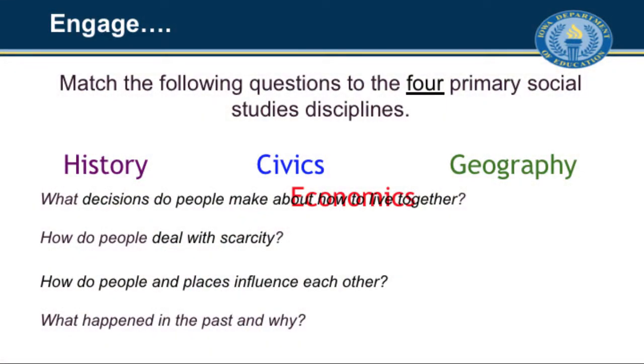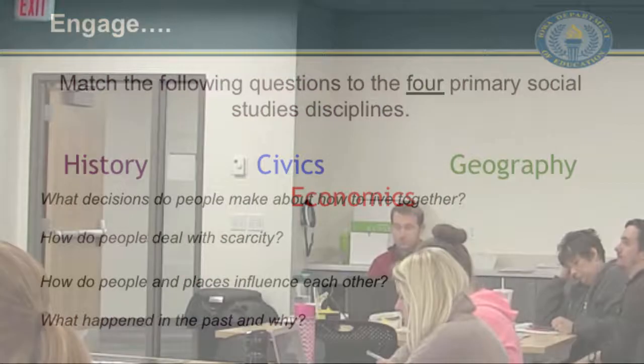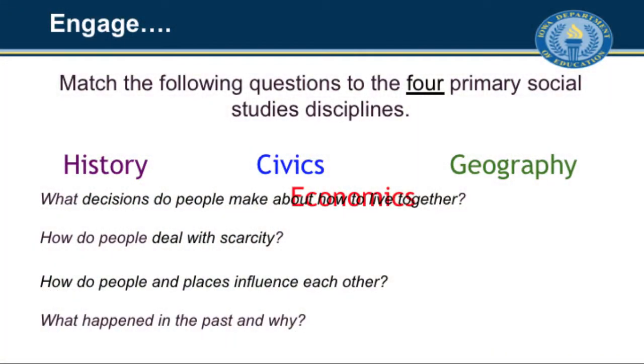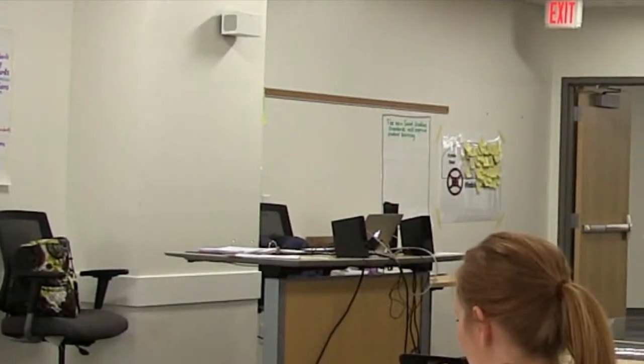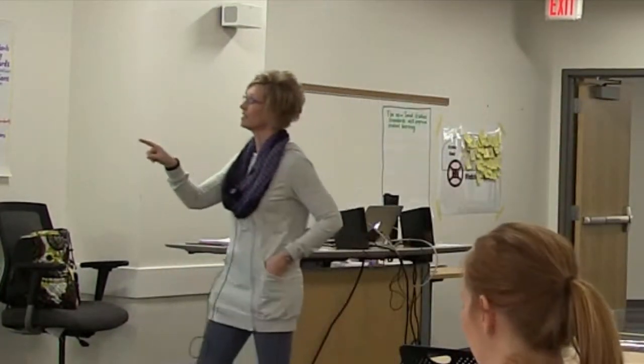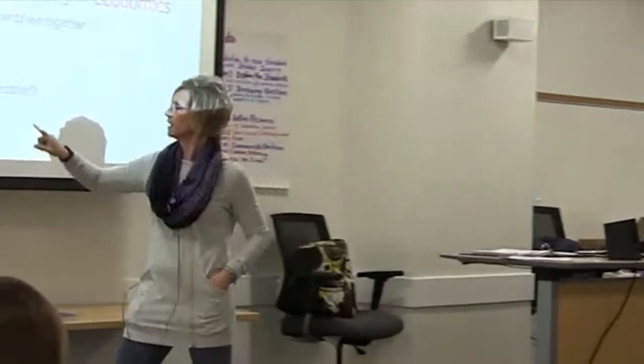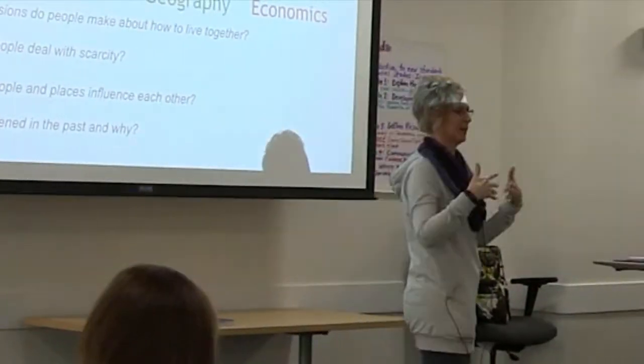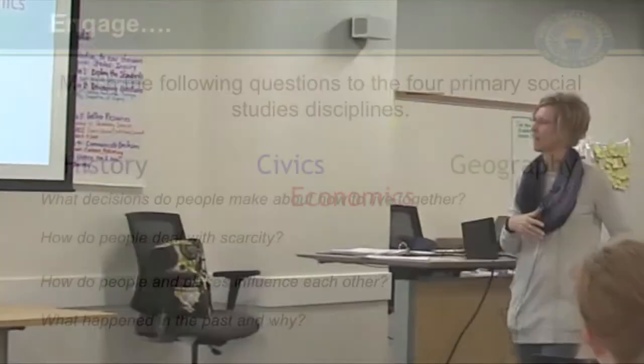How about: how do we deal with scarcity? Economics — obviously the word scarcity is a key word that goes with the economics piece of it. And depending on what the scarcity is, it might fit another one too. How do people and places influence each other? Geography would make the most sense there when we're talking about people and places. I also, when I see people, it makes me think of civics and how people get along and can work together with rules and stuff that way too.